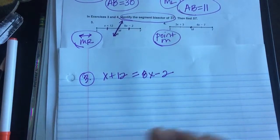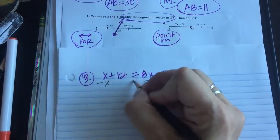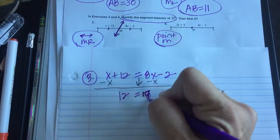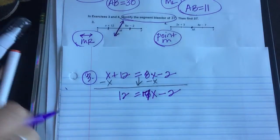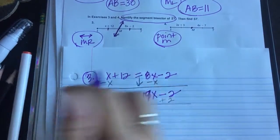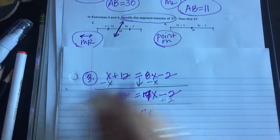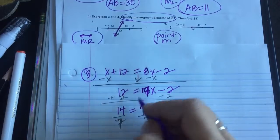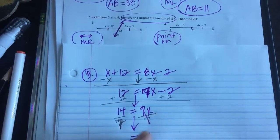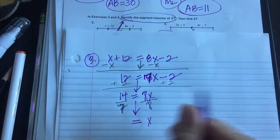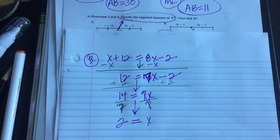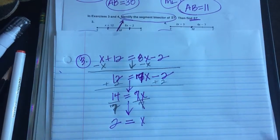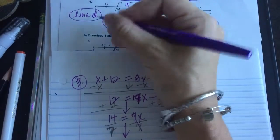My choice is to subtract x from both sides. 8x minus x is 7x. Even if you started it a different way, you should still get the same x value. I'm going to add 2 to both sides: 12 + 2 = 14, equals 7x. Divide both sides by 7 — x equals 2. But that's not the end of the problem. You have to go back and find ST, so s to m is 2 + 12 = 14.